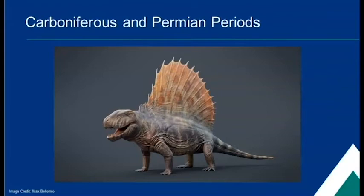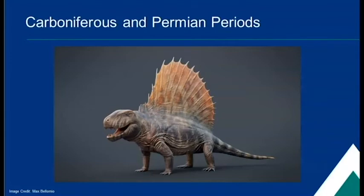Next was the Carboniferous and then the Permian periods. During the Carboniferous period, there was so much oxygen that plants and insects were giant compared to today. Amphibians and early reptiles dominated at this time. By the Permian period, the Dimetrodon was one of the top predators. A Dimetrodon is a reptile, but not a dinosaur — the dinosaurs would come later on.